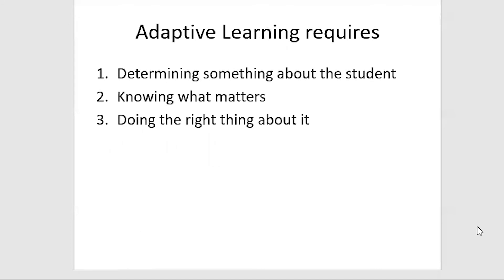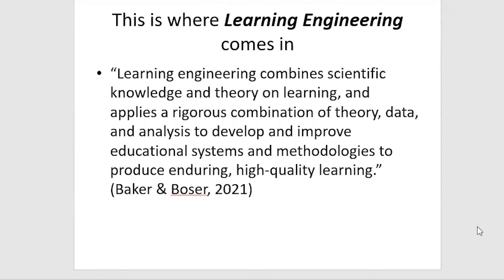Adaptive learning requires determining something about the student, knowing what matters, and then doing the right thing about it. And that third thing — doing the right thing about it — that's where learning engineering comes in.